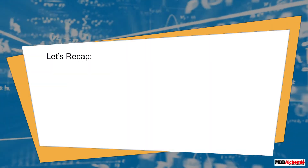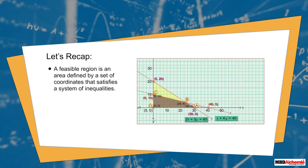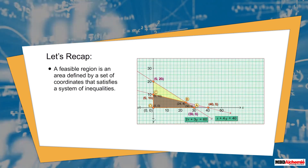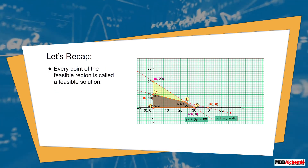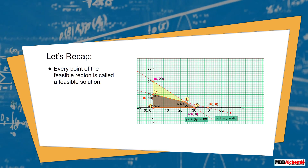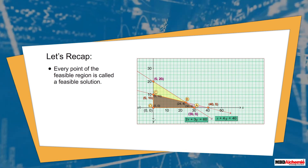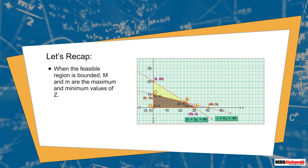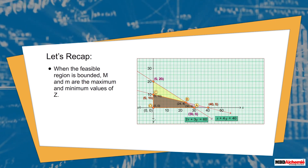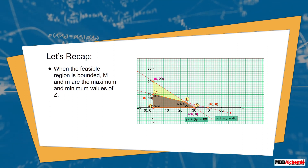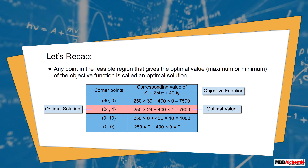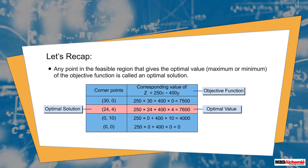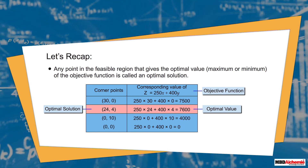Let's recap: a feasible region is an area defined by a set of coordinates that satisfies a system of inequalities. Every point of the feasible region is called a feasible solution. When the feasible region is bounded, the maximum and minimum values of Z exist. Any point in the feasible region that gives the optimal value — maximum or minimum — of the objective function is called the optimal solution.